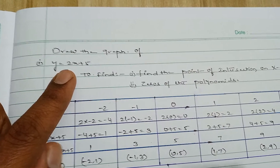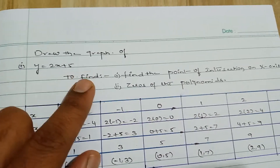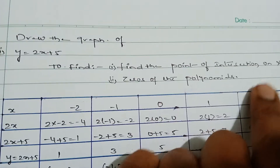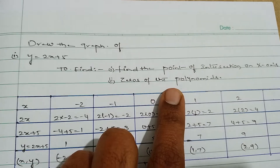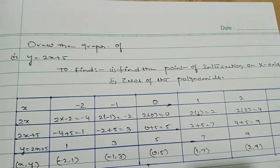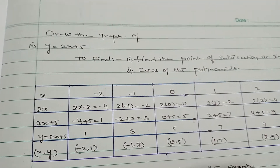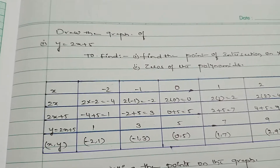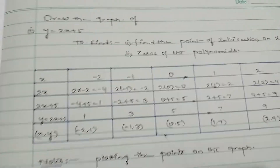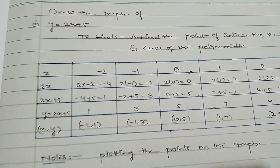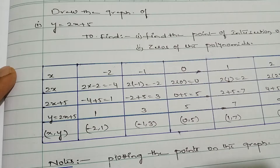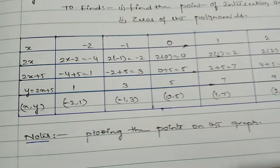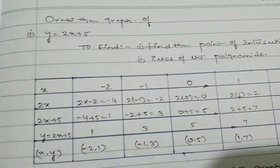For the first polynomial y = 2x + 5, we have to find the point of intersection on the x-axis and also the zeros of the polynomial. In the previous video we solved step by step, but here we will identify the zeros of the polynomial based on the graph.